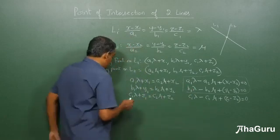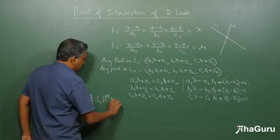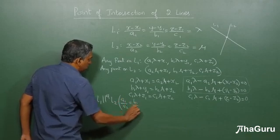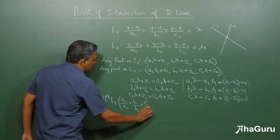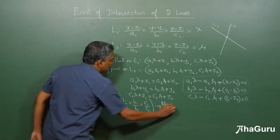If lines are parallel, if L1 parallel to L2, a1 by a2 equals b1 by b2 equals c1 by c2. No intersection point.